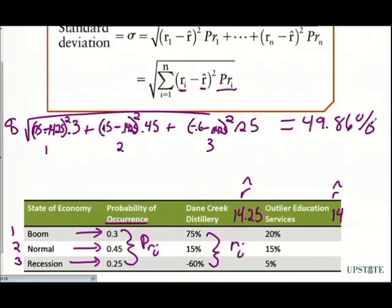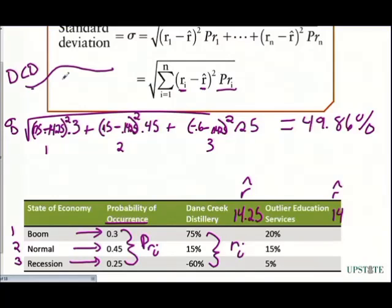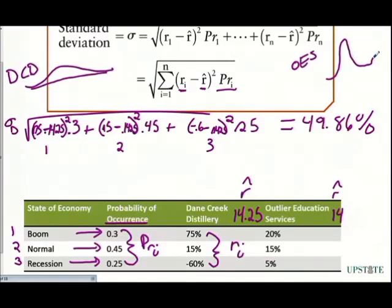Before we compute this on Outlier Education Services, do we think the standard deviation is going to be lower or higher? By just looking at these numbers, it should be lower because it's a much tighter distribution. Dane Creek Distillery is going to have a wider distribution, whereas Outlier Education Services is going to be much tighter — taller and tighter. There's going to be a lot more action underneath that bell curve; the observations are going to be much closer together.